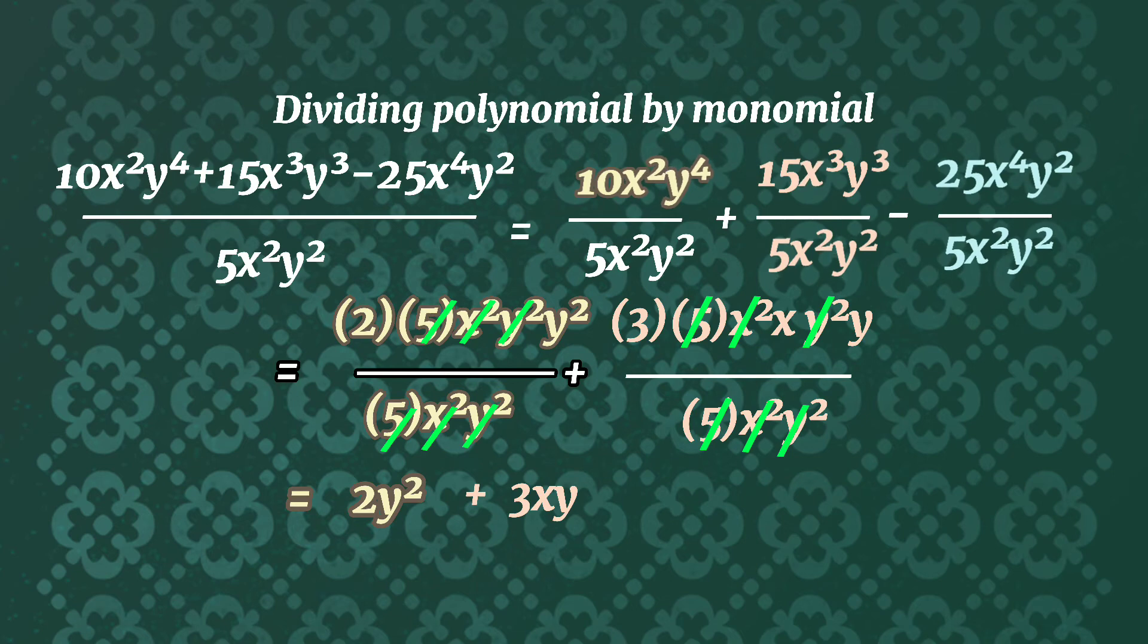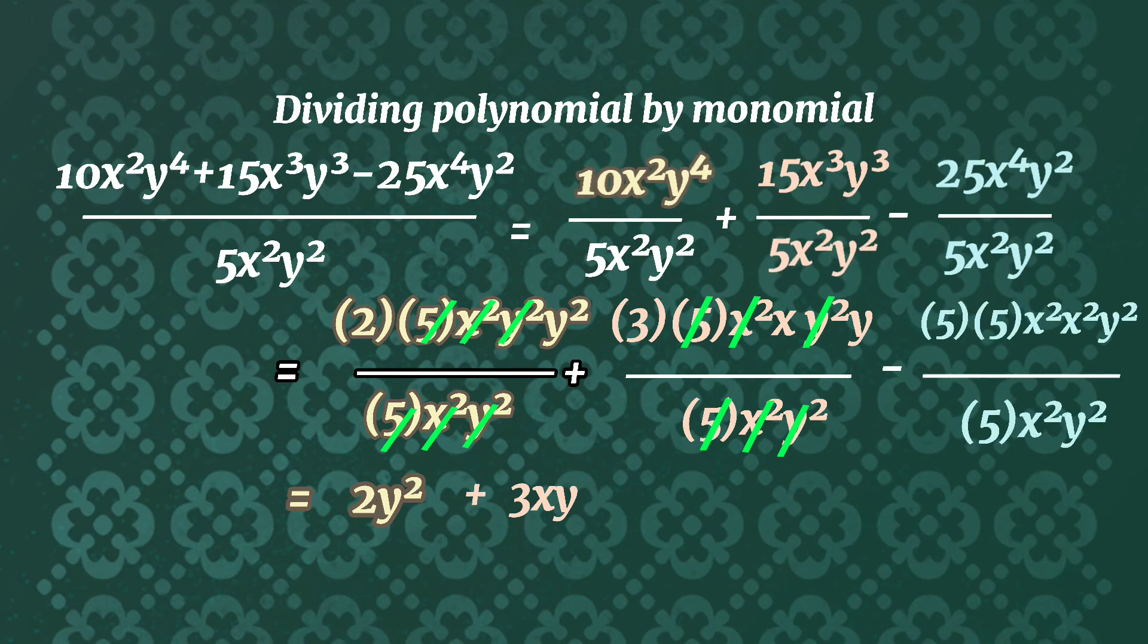Lastly, divide -25x⁴y² by 5x²y². The GCF of 25 and 5 is 5. The GCF of x⁴ and x² is x². The GCF of y² and y² is y². The greatest common monomial factor is 5x²y². Remove this so that the remaining is the quotient, which is -5x².